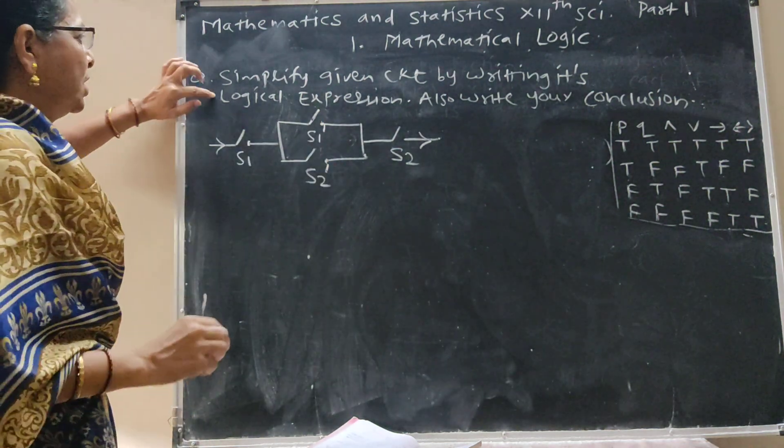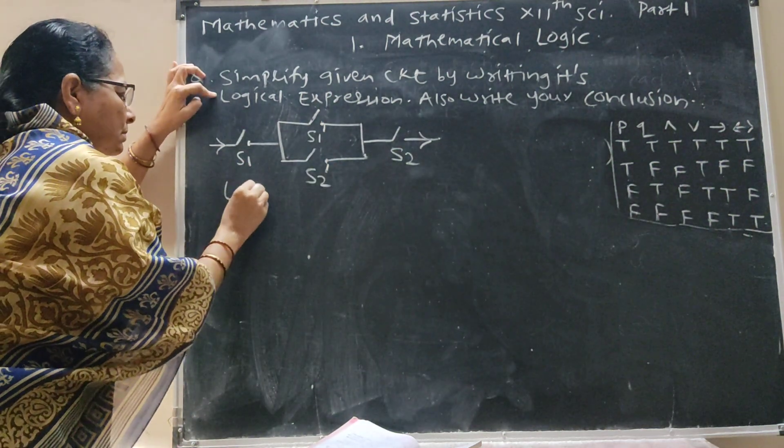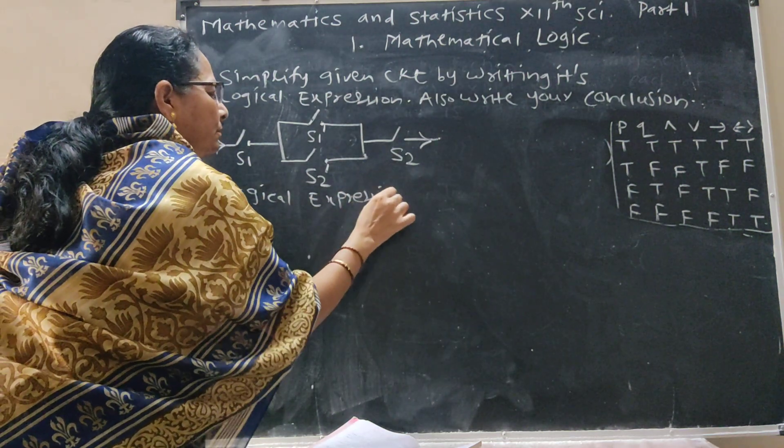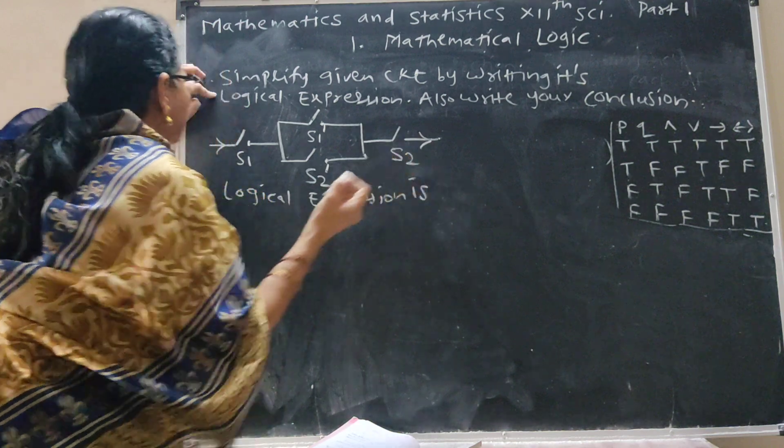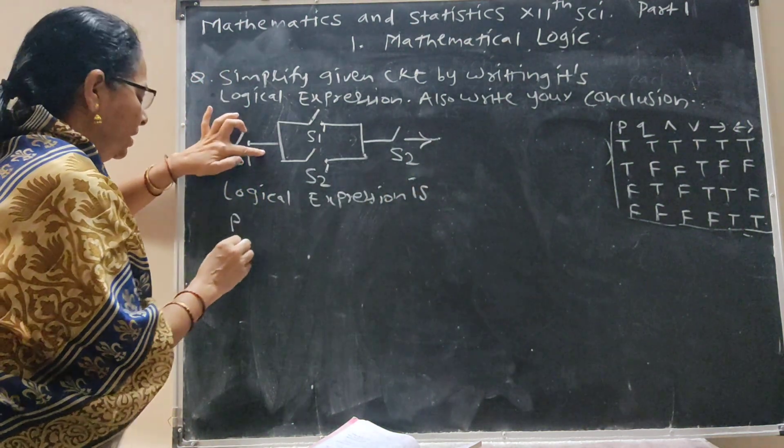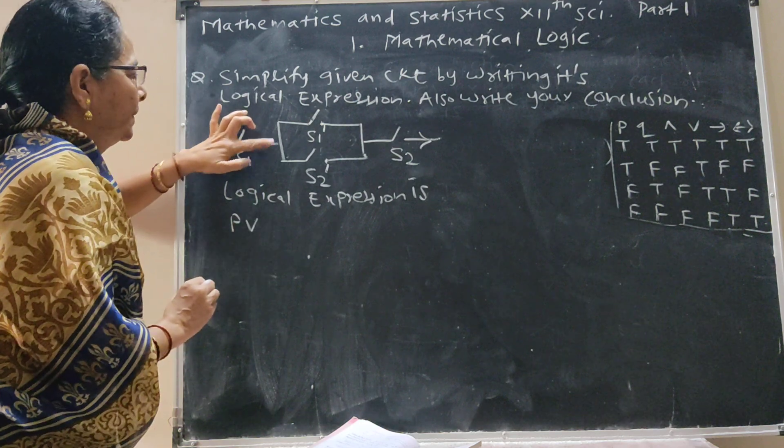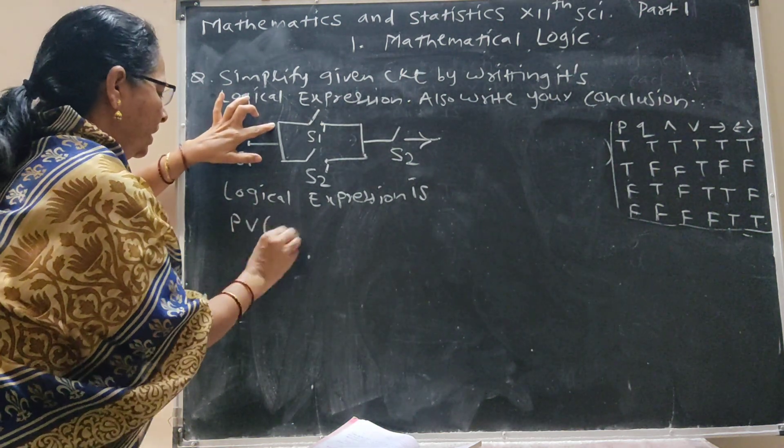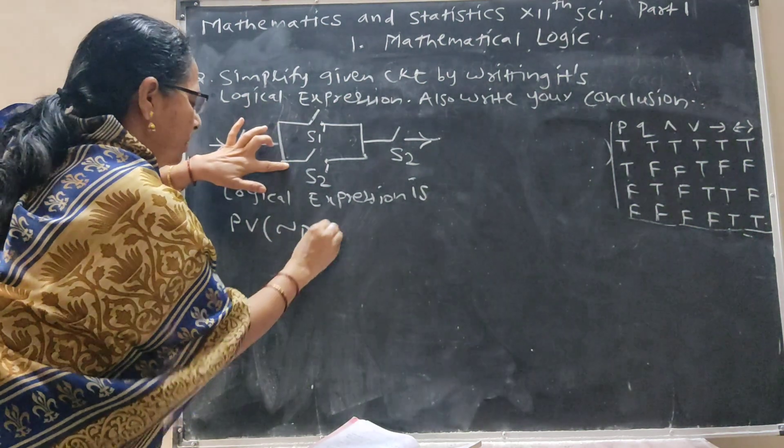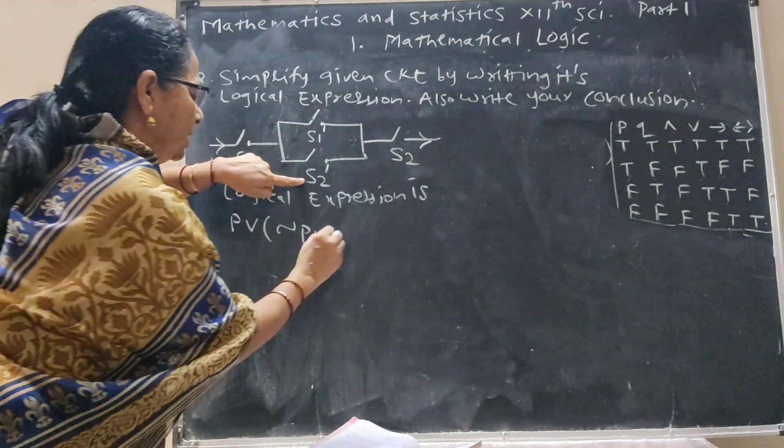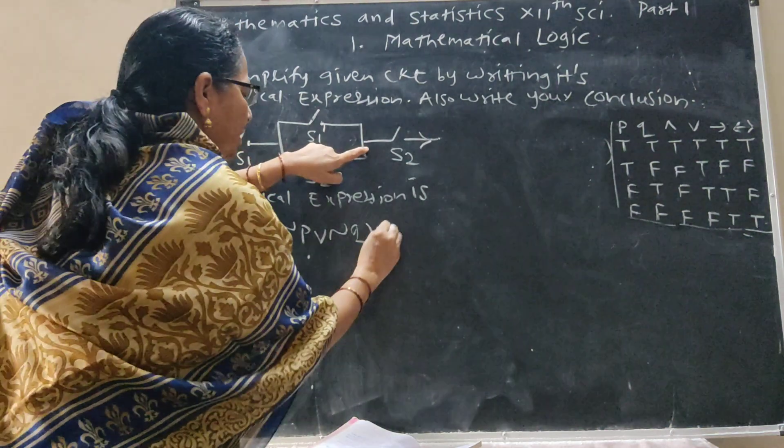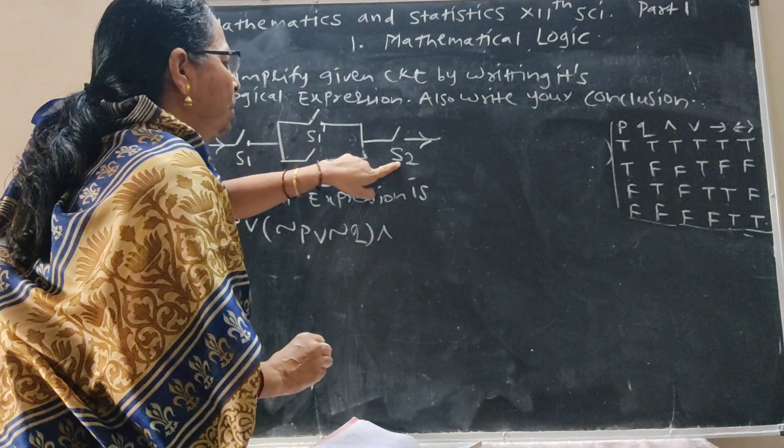Now logical expression is S1 that means P, series connection and now this is in bracket. S1 dash negation P, parallel R, S2 dash negation Q, series connection and S2 Q.